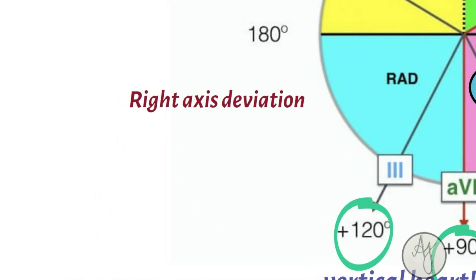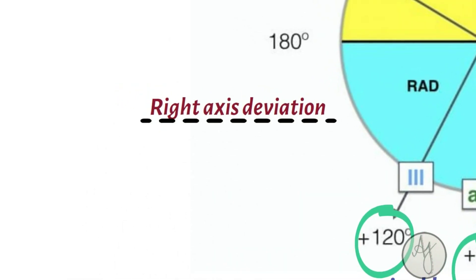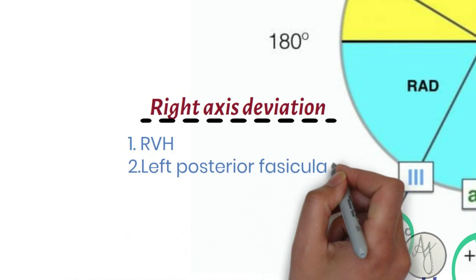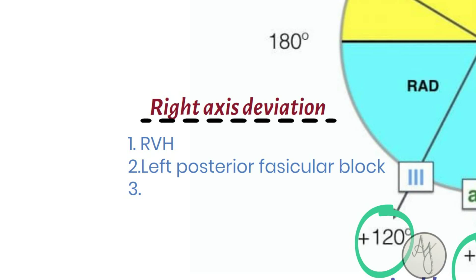If it's a right axis deviation, it will be at 120 degrees towards the L3, and this can occur in right ventricular hypertrophy or a left posterior fascicular block. But it's important to keep in mind that a right axis deviation is physiological in newborns.